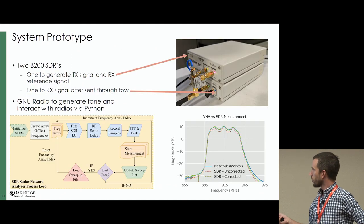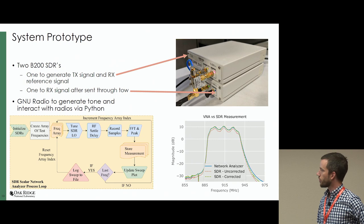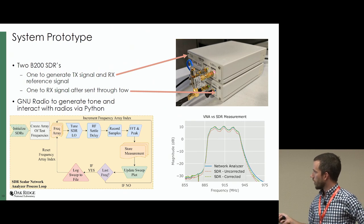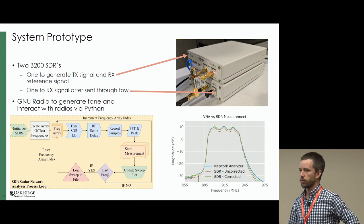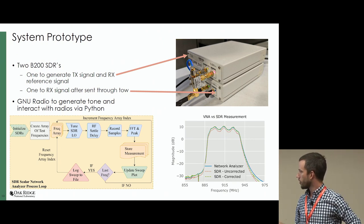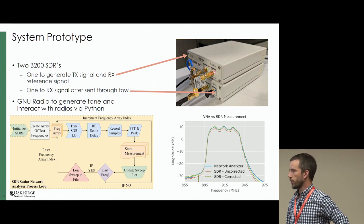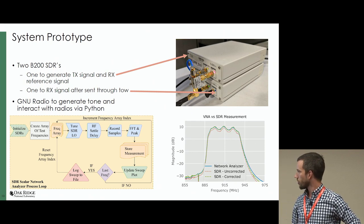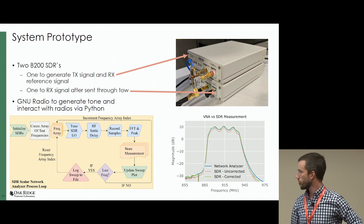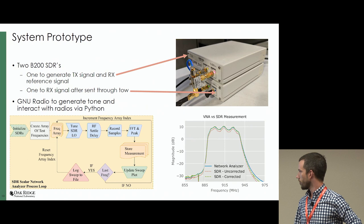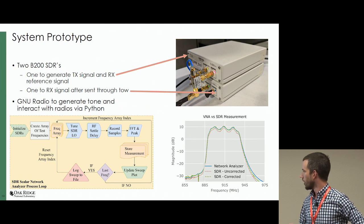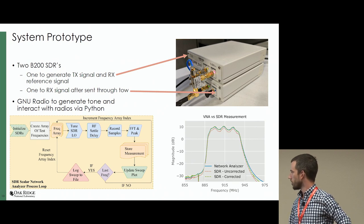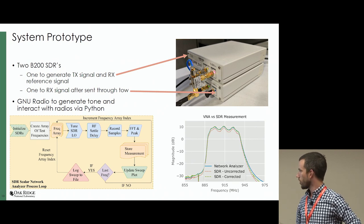The system prototype uses two B200s with a Mini-Circuits power splitter. The top one generates test tones at different frequencies, and the reference is guided back and then sent out through some probes through the toe. We use GNU Radio to generate the tone and interact with the radios in Python. The bottom right here is a test of the system — we had a 915 megahertz filter and amplifier. The blue and green is the network analyzer measurement; red is what we got from measuring with this system as it scanned through frequencies. It measured the passband ripple and was pretty close in amplitude, so small calibration was required. Overall, I was pretty happy with that.